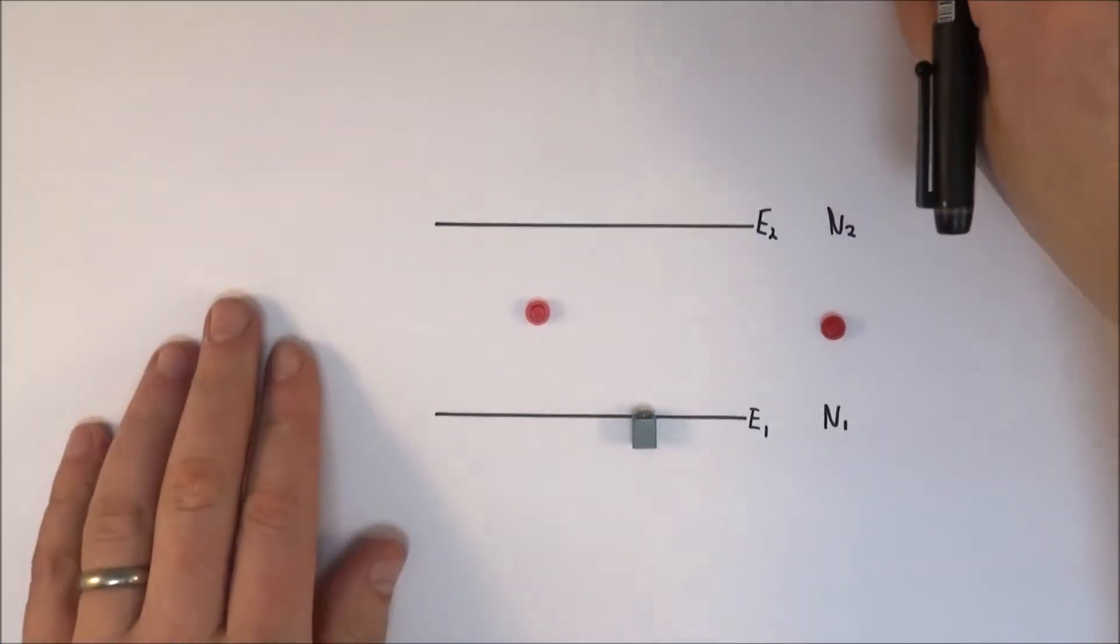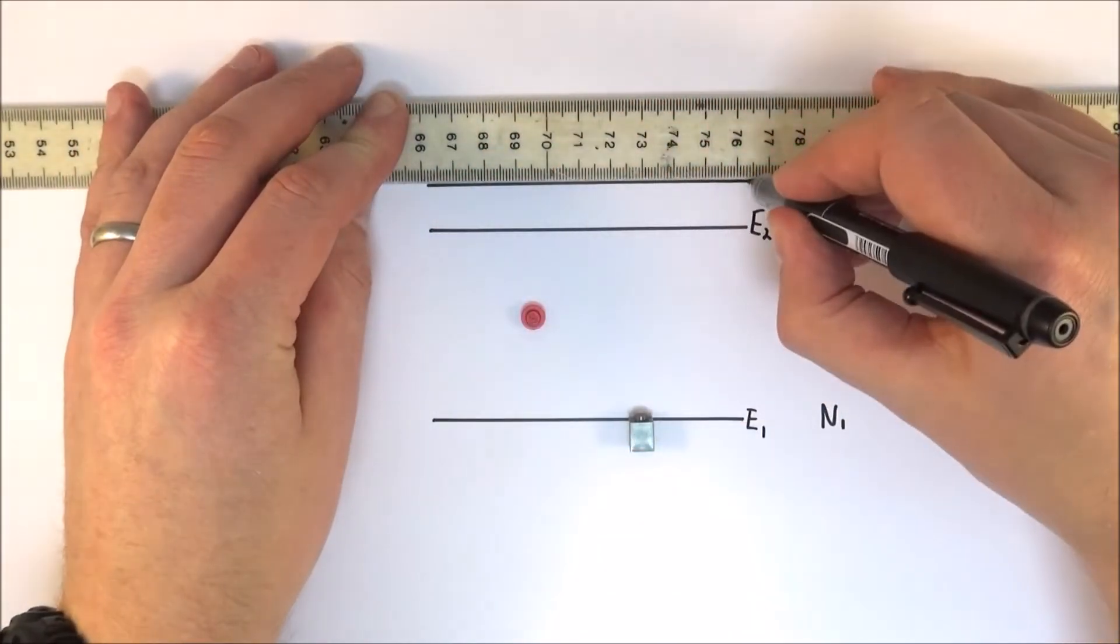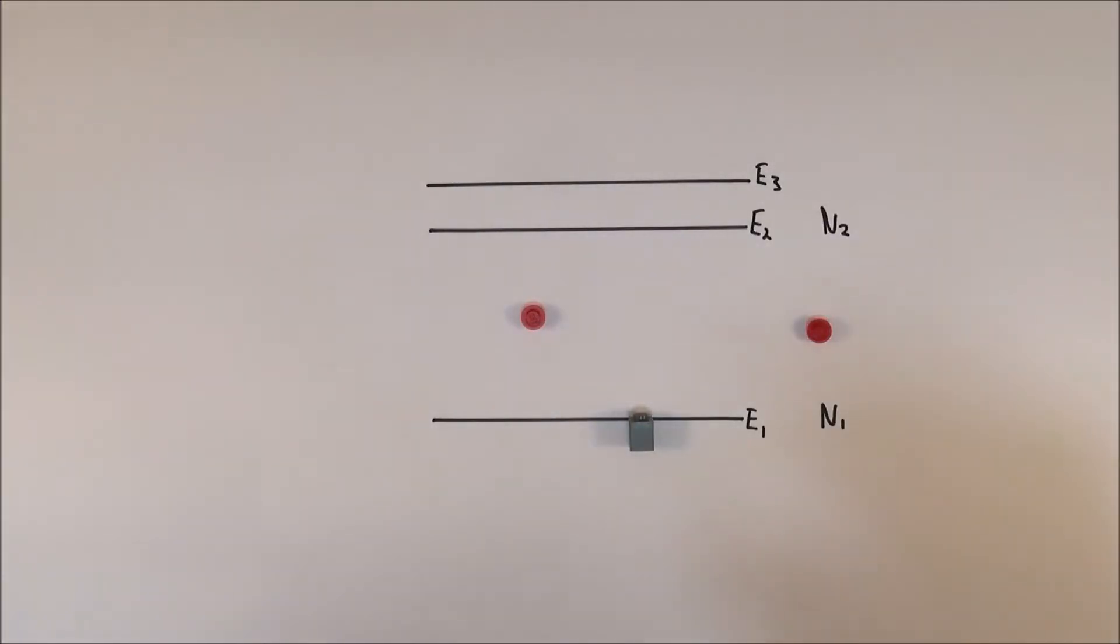So what we're going to do in real life is use a three-level system. I'm just going to draw this extra energy level up here, and I'm going to call that E3.